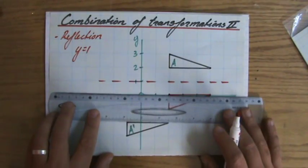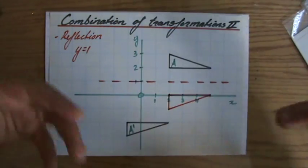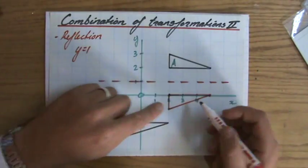Now there are more mirror lines you could have chosen. For instance, you could have chosen the X-axis. Or this one, or that one. More possibilities. But I've chosen this one.